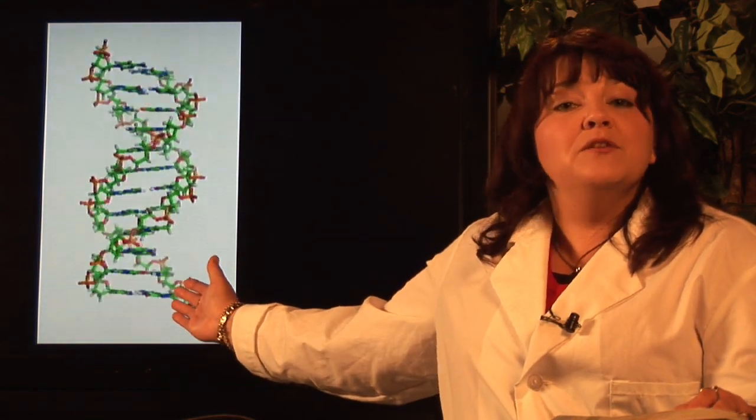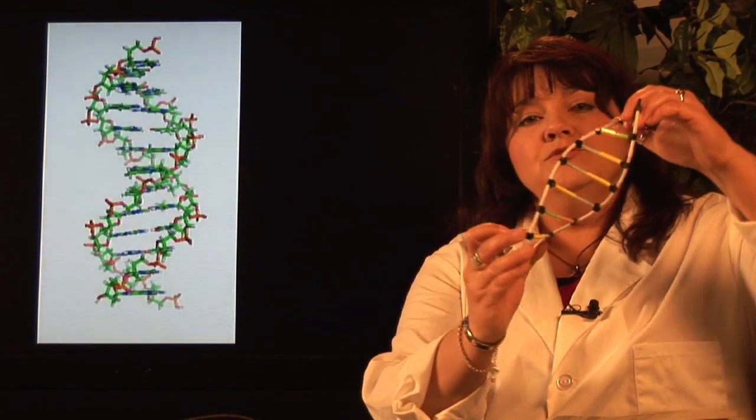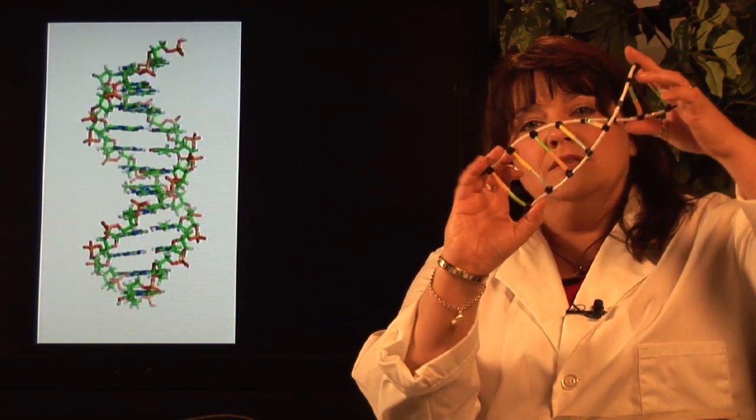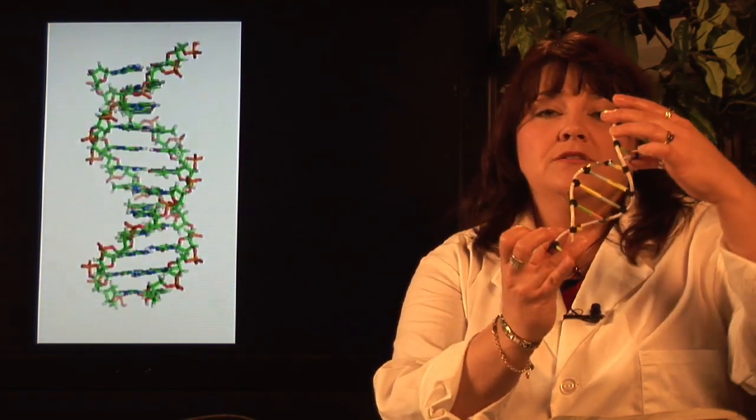DNA is the genetic material that makes you, you. It's kind of like the blueprint — or sometimes I'll describe it to my students as being like the recipe — that the body follows to make you, you. DNA is twisted up, and we call this a double helix: two strands that twist around each other.